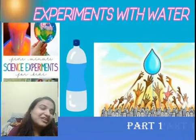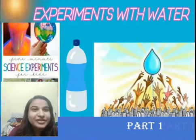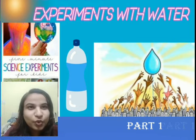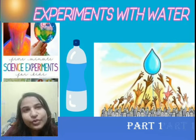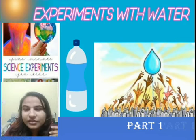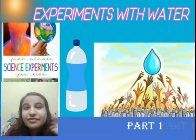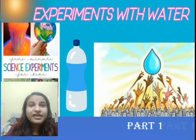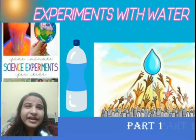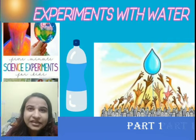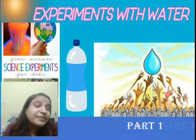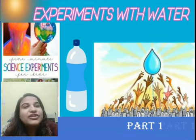Hi children, welcome back to environmental studies class. Today we are going to start with chapter number 7, that is 'Experiments with Water.' In chapter number 6, we studied where we get water from, how we use it, methods to conserve it and keep it safe for future use, because it is something we get from nature and it is being used up very fast. In this chapter, we are going to learn about what experiments we can perform with water and how magical it is.